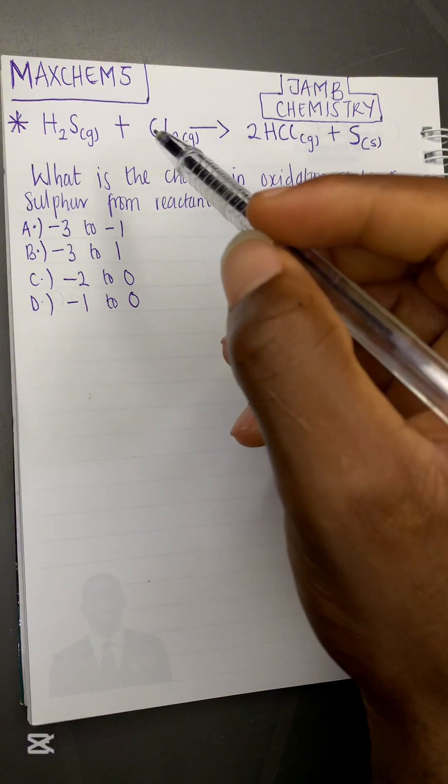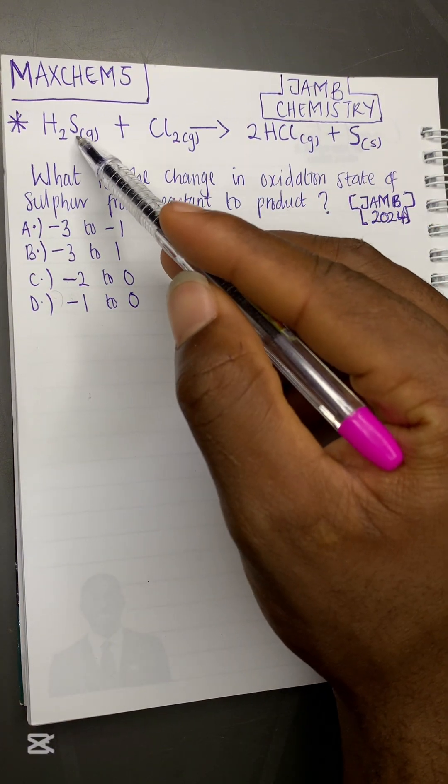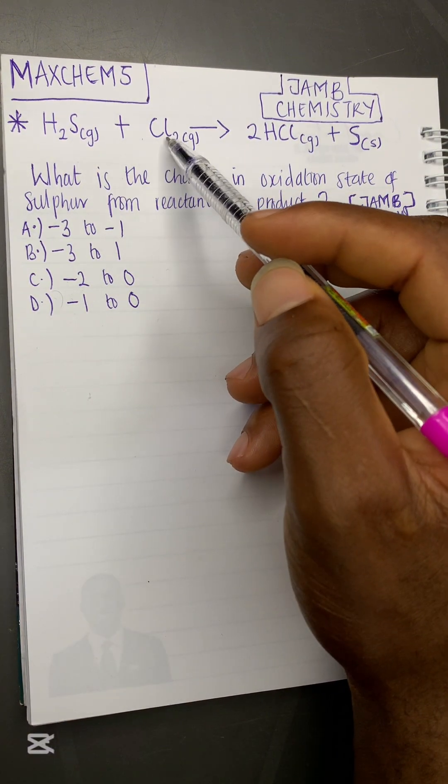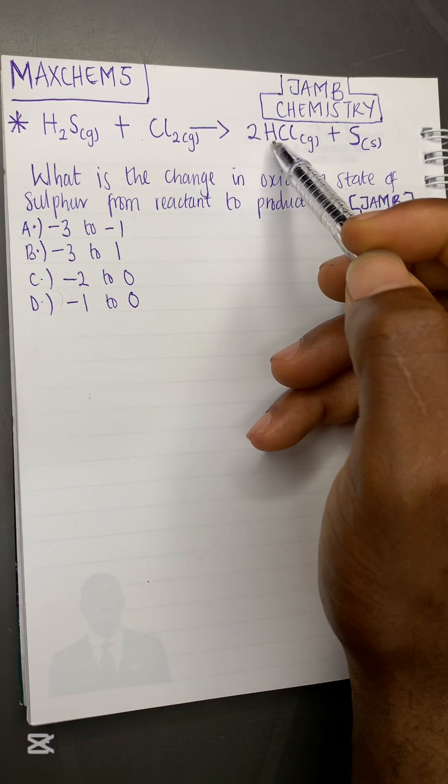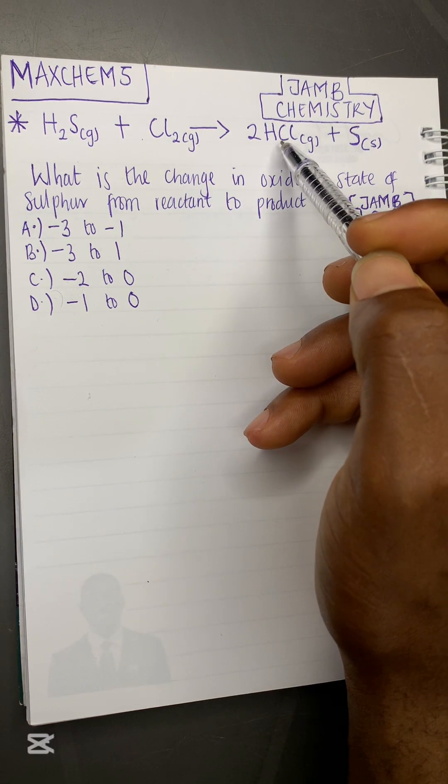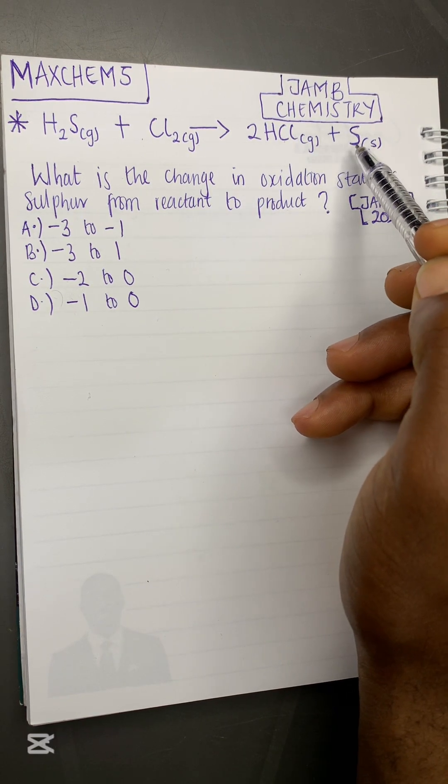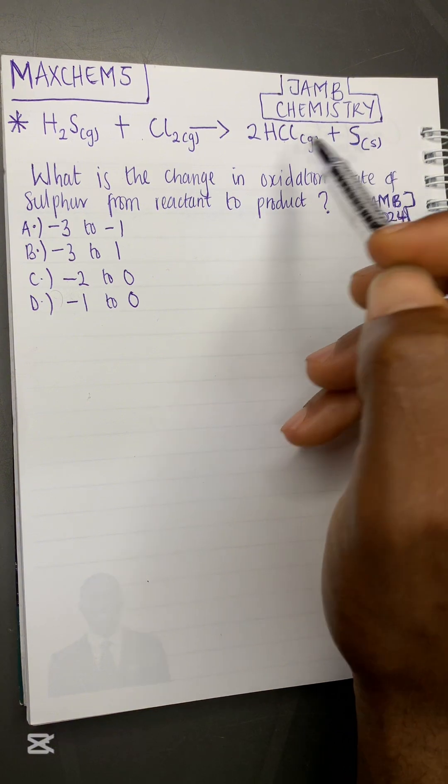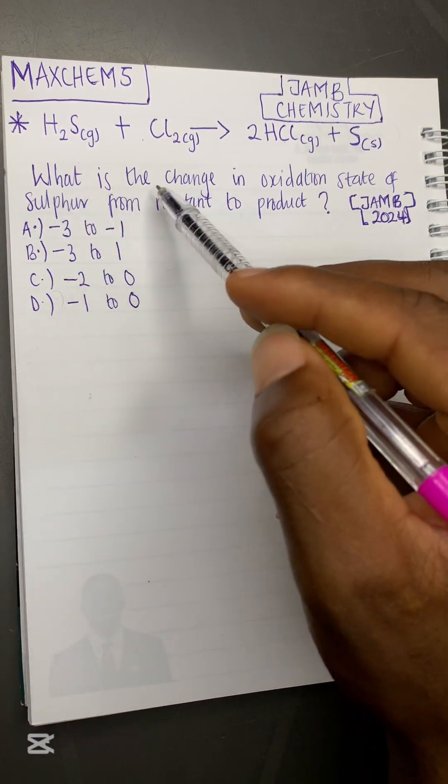The question is very simple. It says H₂S, which is hydrogen sulfide, reacting with chlorine gas to give us two moles of HCl, which is hydrochloric acid, plus one mole of sulfur in solid. Now the question is, what is the change in oxidation state of sulfur from reactant to product?